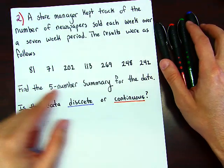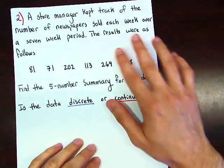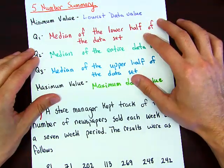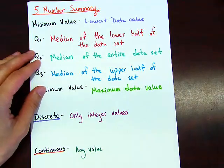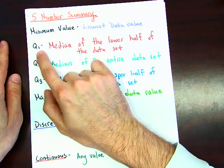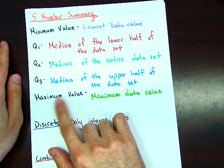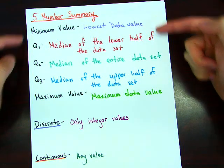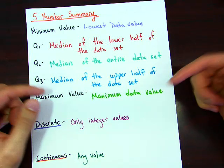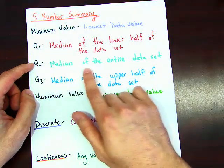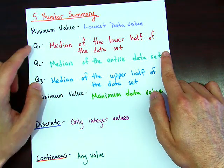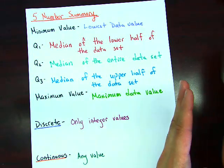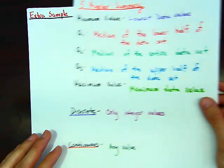Let's look at the first part: find the five number summary for the data. You've gone through this with your professor during the semester, but just to recap — the five number summary consists of the minimum value, Q1, Q2, Q3, and the maximum value. The minimum is the lowest data value, the maximum is the highest, Q2 is the median of the entire data set, Q1 is the median of the lower half, and Q3 is the median of the upper half.